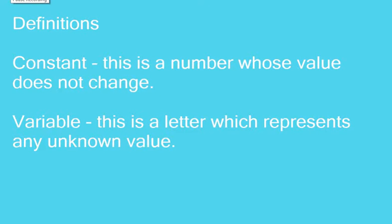Let's look at our definitions. A constant - this is a number whose value does not change. And what is a variable? A variable is a letter which represents any unknown value.